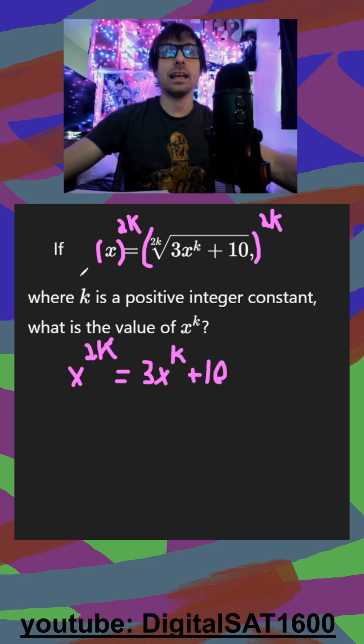And then naturally, we want to get everything to one side so we can factor. So it's x to the 2k minus 3x to the k minus 10, and it's all equal to zero.